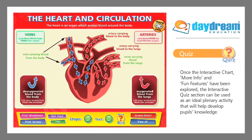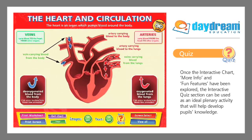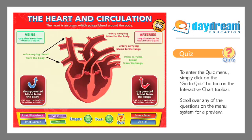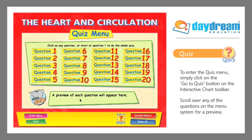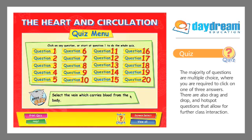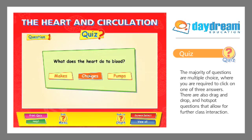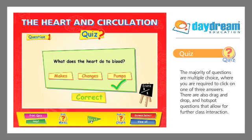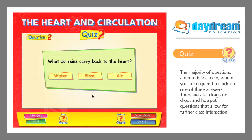Once the interactive chart, more info, and fun features have been explored, the interactive quiz section can be used as an ideal plenary activity that will help develop pupils' knowledge. To enter the quiz menu, simply click on the Go to Quiz button on the interactive chart toolbar. Scroll over any of the questions on the menu system for a preview. The majority of questions are multiple choice, where you're required to click on one of three answers. There are also drag-and-drop and hotspot questions that allow for further class interaction.